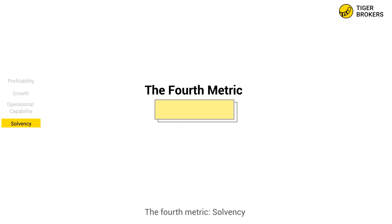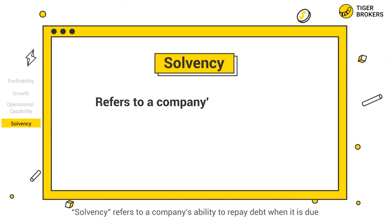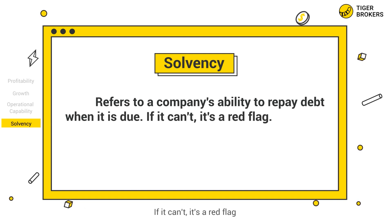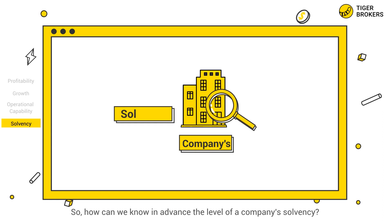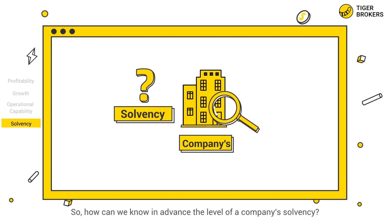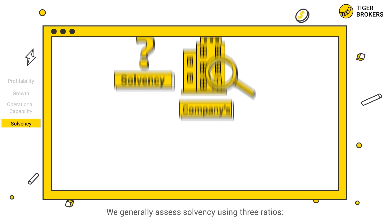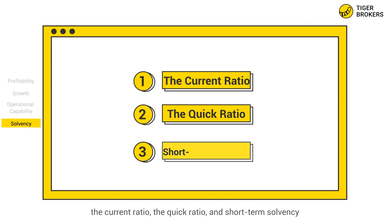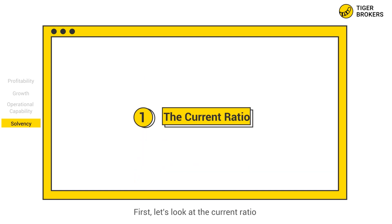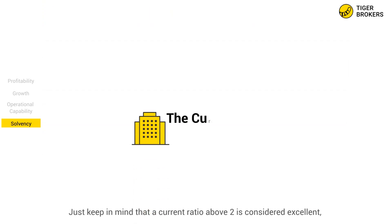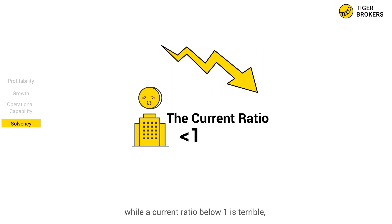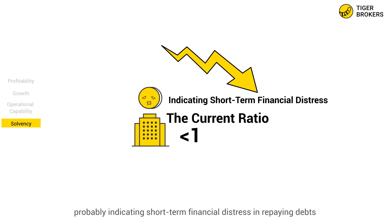The fourth metric: solvency. Solvency refers to a company's ability to repay debt when it is due. If it can't, it's a red flag. We generally assess solvency using three ratios: the current ratio, the quick ratio, and short-term solvency. Just keep in mind that a current ratio above two is considered excellent, while a current ratio below one is terrible, probably indicating short-term financial distress in repaying debts.